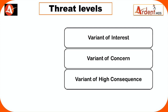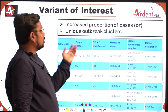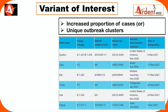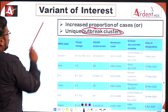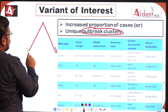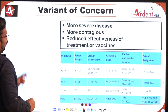You may get a question: what is called a Variant of Interest? A Variant of Interest is a variant which is present in a cluster in a particular area — either with increased proportion of cases or decreased proportion of cases.